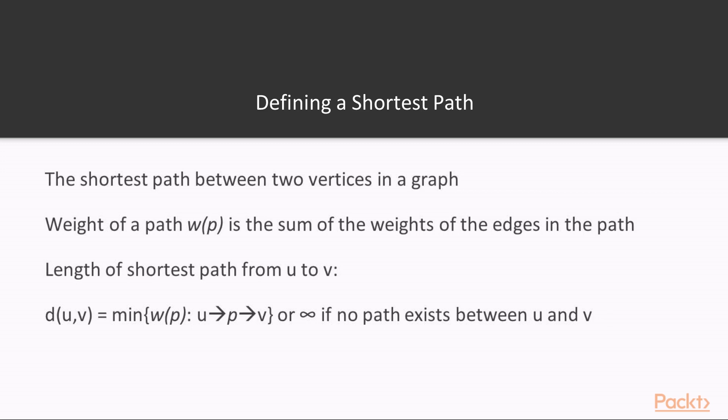As there might be several paths from u to v, we specify here that we want the path with the lowest combined edge weight. That is our definition of a shortest path. Note that for unweighted graphs where all edges have weight 1, the shortest path is equal to the path with the fewest vertices.